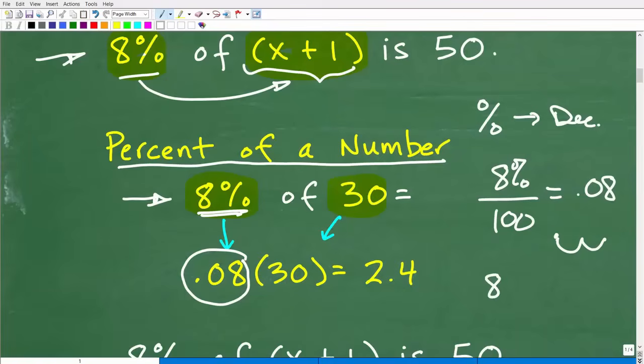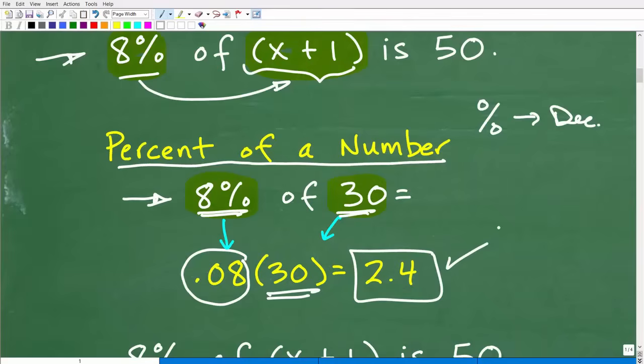So anytime you want to go from a percent to a decimal, just divide by 100. And effectively, that's the same as moving a decimal point over two places to the left. So 8 is the same thing as 8.0%. So if I want to change this to a decimal, I can move that over two places to the left, that decimal point, I'm going to get 0.08. Then we just simply multiply by that number. So 0.08 times 30, we can use our calculator, we'll get 2.4.